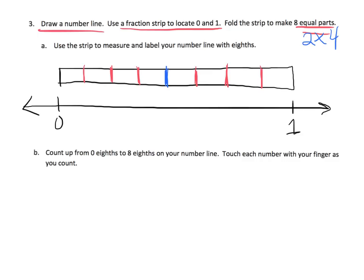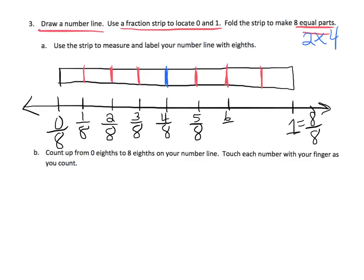Now we're going to label our number line with eighths. This is zero-eighths and this right here is eight-eighths. So that means: one-eighth, two-eighths, three-eighths, four-eighths, five-eighths, six-eighths, seven-eighths, and the last one is eight-eighths right here.